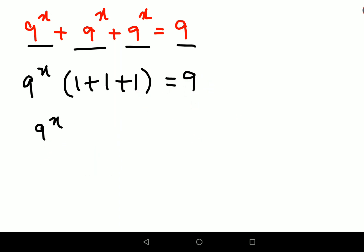can be written as 9 raised to x into 3, and this is 9. Now dividing both sides by 3, this cancels. Eventually the question changes to 9 raised to x equals to 3.